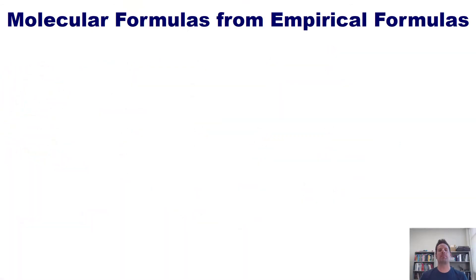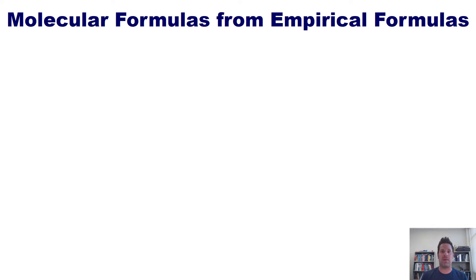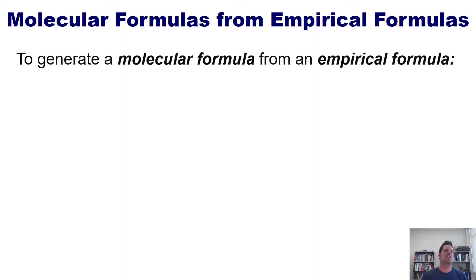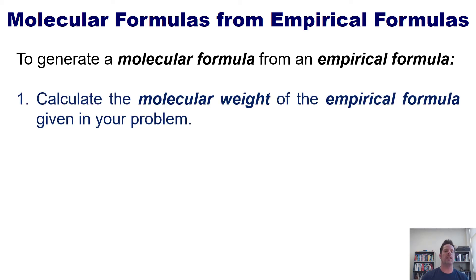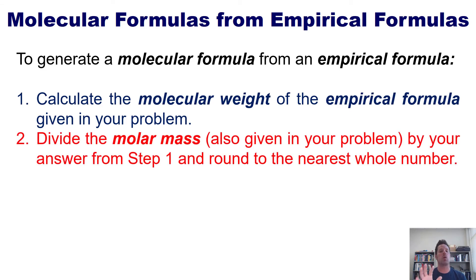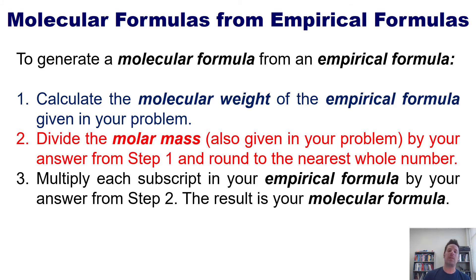We now continue with molecular formulas from empirical formulas. Once you have an empirical formula, you might be asked what is its molecular formula. Remember, the empirical formula has all subscripts reduced to their smallest whole numbers, but that is not always the same as the actual number of atoms in the actual molecules of that substance — that's called the molecular formula. To generate a molecular formula from an empirical formula: step one, calculate the molecular weight of the empirical formula. Step two, divide the molar mass (given in the problem) by your answer from step one and round to the nearest whole number. Step three, multiply each subscript in your empirical formula by the answer from step two. The result is your molecular formula. Let's work out some examples.